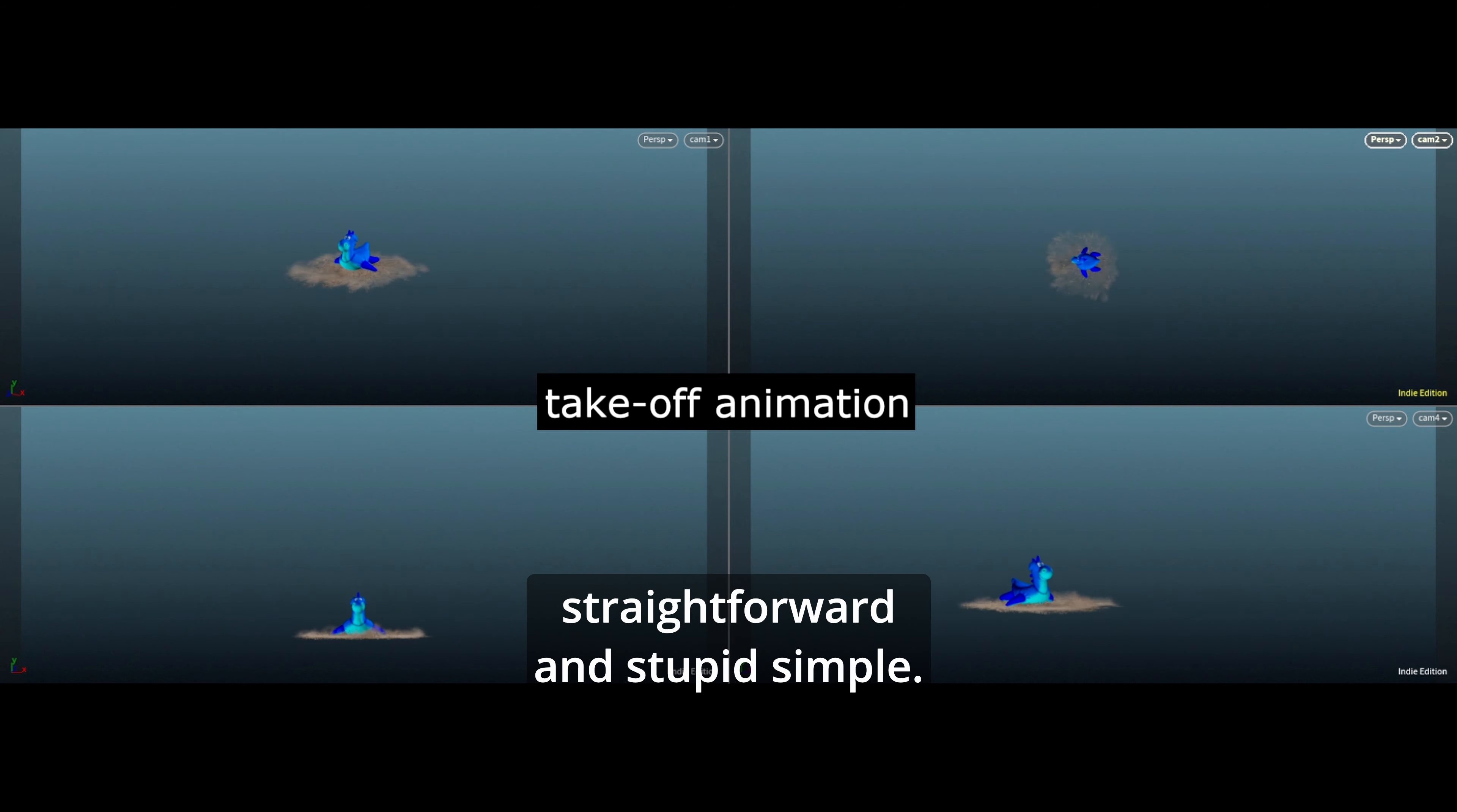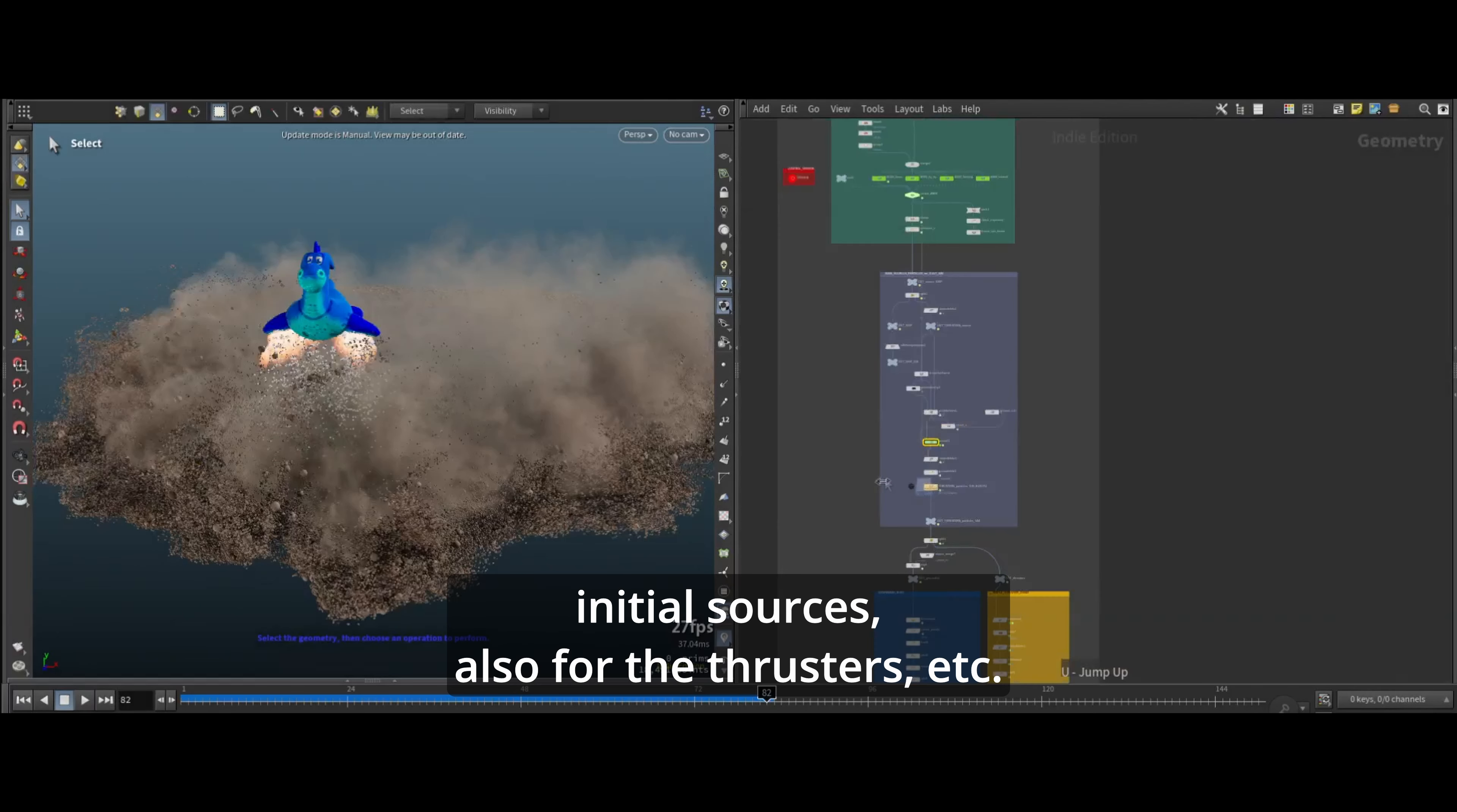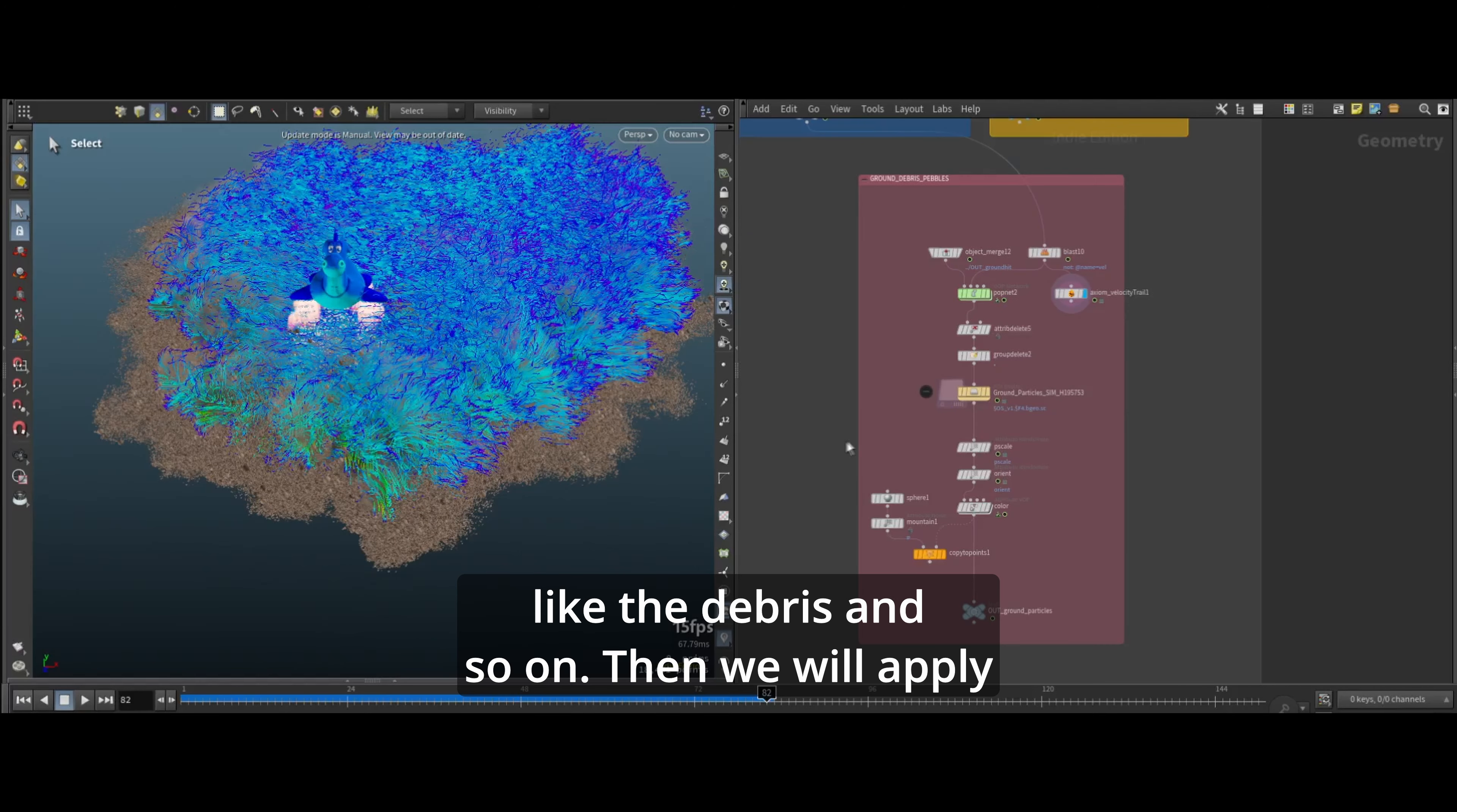We will keep the whole setup really straightforward and stupid simple. The simpler, the stronger, the better. So we'll look into pop-particles for our initial sources, also for the thrusters, etc. And of course, we are going to use Axiom Solver to simulate all the volumetrics. And we'll use the velocity from our Axiom simulation to advect some more particles, like the debris and so on.